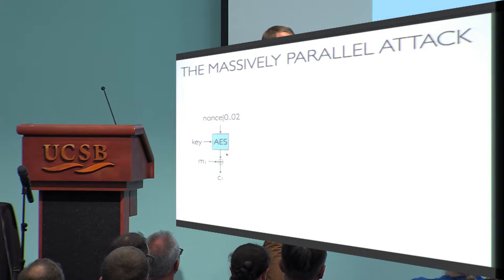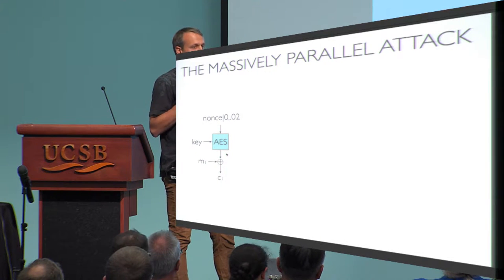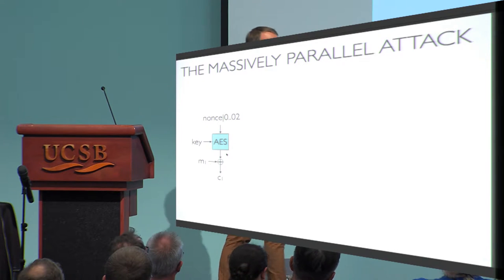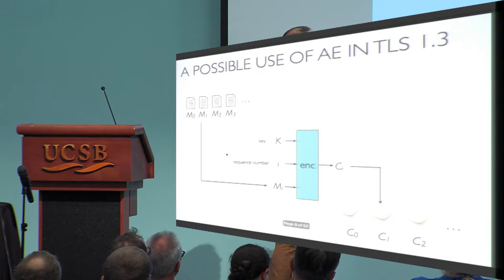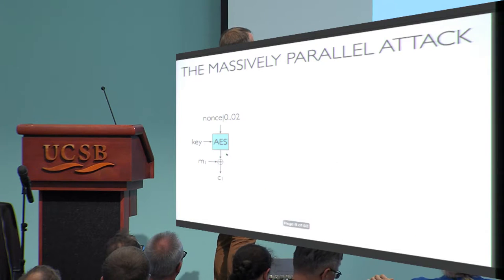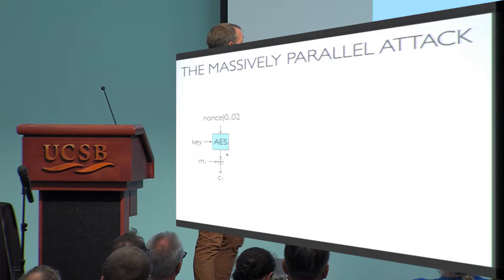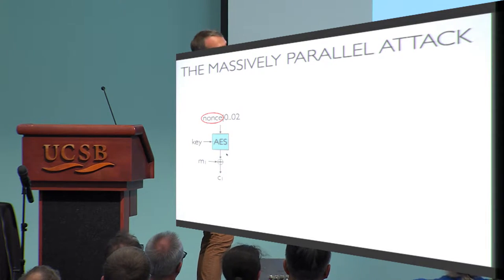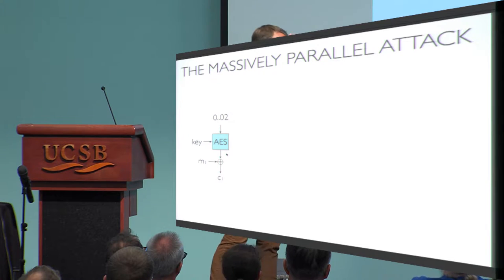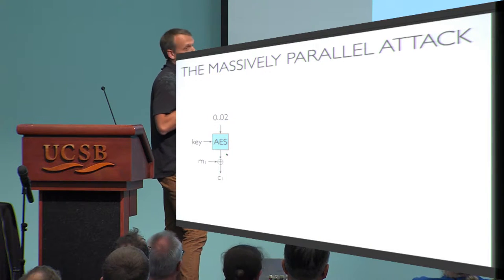Now there is a possible attack that a computationally and storage-wise powerful entity could run. I'll quote the first part of AES-GCM here. Looking at the encryption of the first block of the first message of the channel: the first sequence number is all zeros, so the first nonce is all zeros. The nonce input turns out to be 126 zeros, then a one, then a zero.